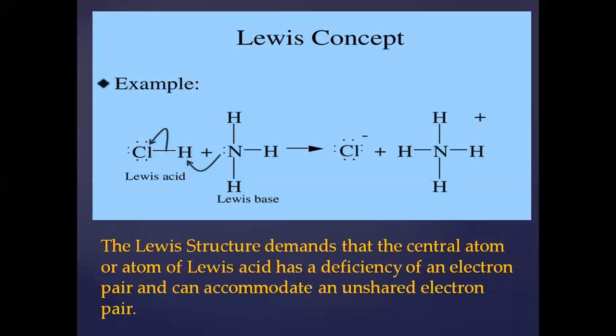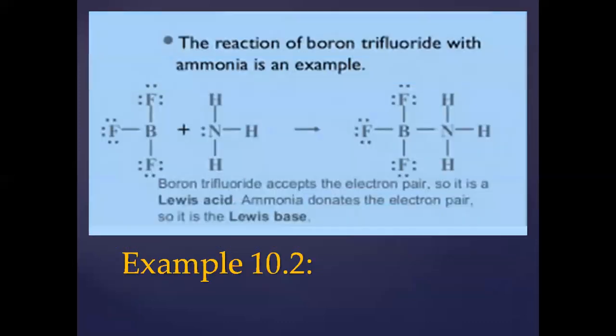The base has an ability to donate an unshared pair of electrons. Here is another reaction of boron trifluoride with ammonia that shows the concept of Lewis acid and base. You can see here BF3. Here is ammonia NH3. Ammonia nitrogen has a lone pair. The electron pair will donate to BF3.